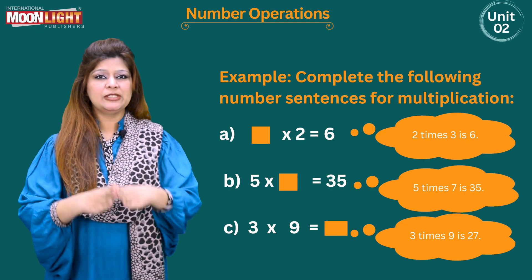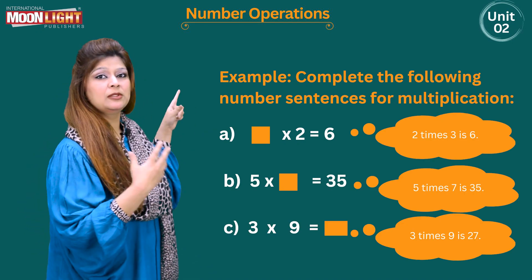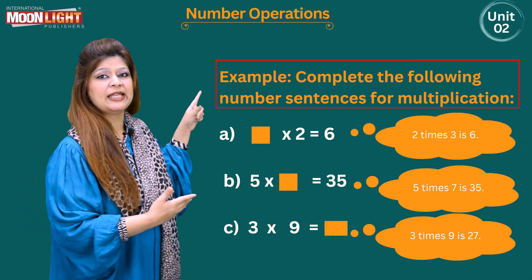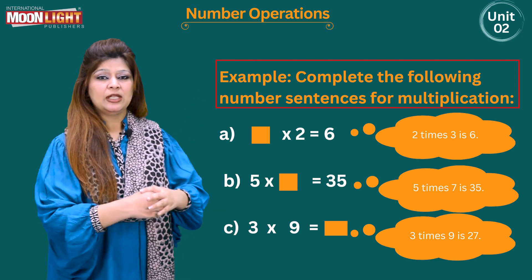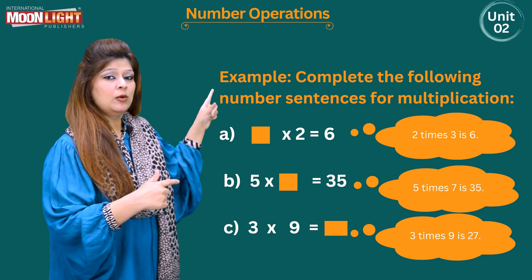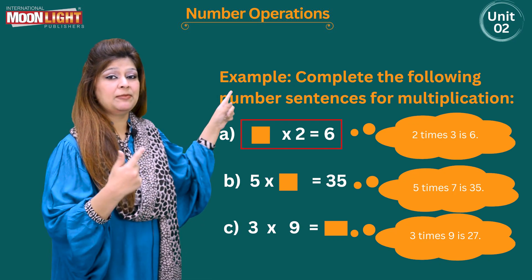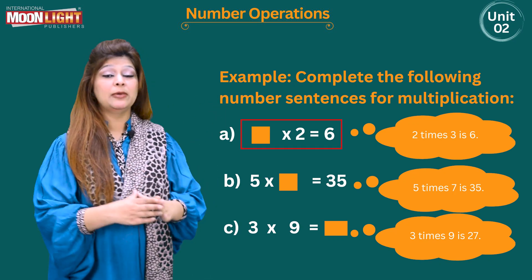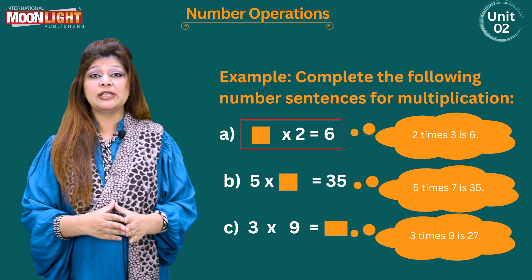Let's solve an example, my dear students. This is the statement of the example: Complete the following number sentences for multiplication. That is part a. You can check that first is empty box, then multiplication sign, then number 2, equals symbol, then 6.